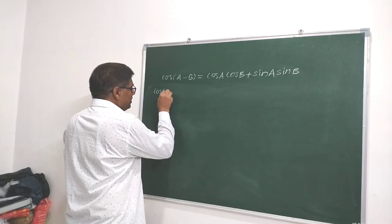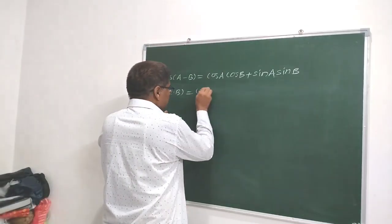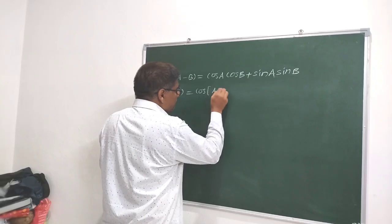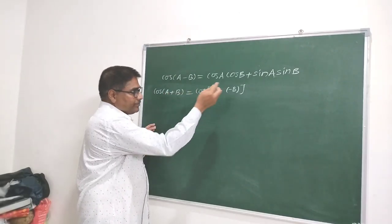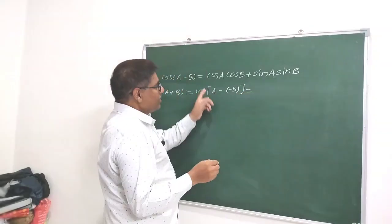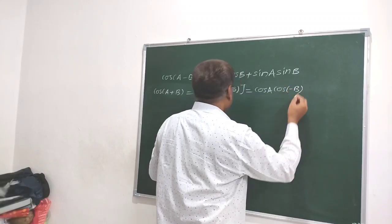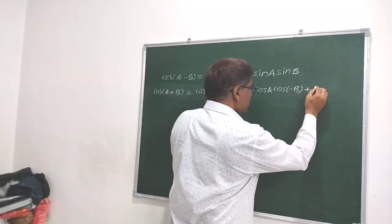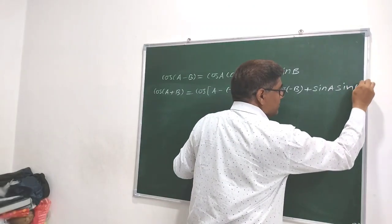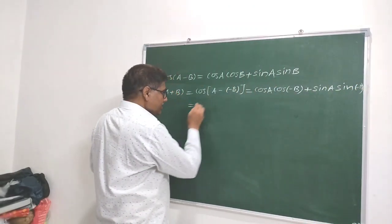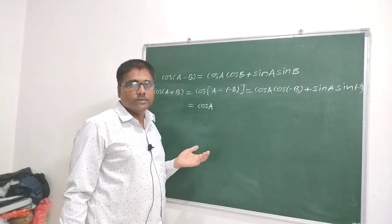cos(A+B) — we have to do a little manipulation. cos(A+B) can be written as cos(A-(-B)), such that we can apply the cos(A-B) formula. This is equal to cos A · cos(-B) + sin A · sin(-B). Now, cos(-B) equals +cos B, because cos(-θ) = +cos θ.